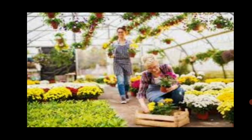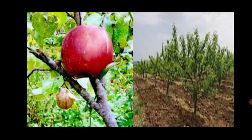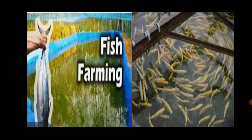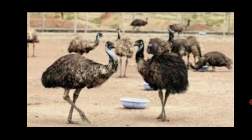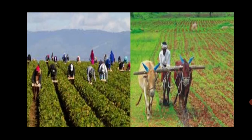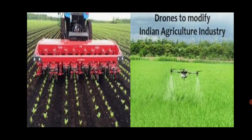Horticulture is agriculture of plants for food materials, comfort and beauty, and decoration. Orchidry, pisciculture (fish farming), pig farming, emu farming, etc. are included in agriculture. In agricultural occupation, resources like manpower, animals, implements, etc. are used.